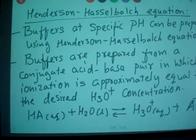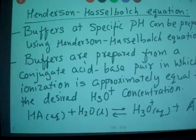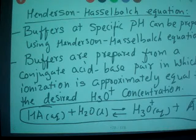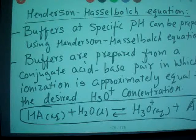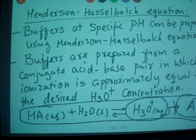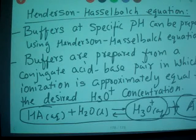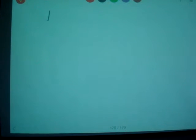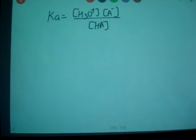We are going to write acid ionization constant for this particular equation. How do you write Ka? H3O plus concentration, A minus concentration, divided by HA concentration. I'm going to write Ka, which is H3O plus ion concentration times A minus concentration divided by HA concentration.